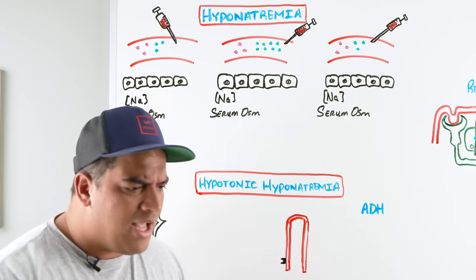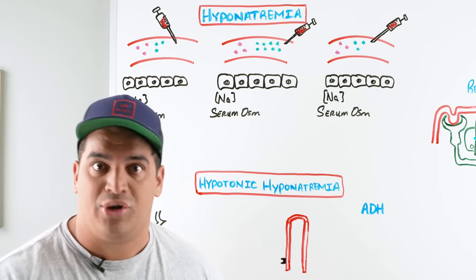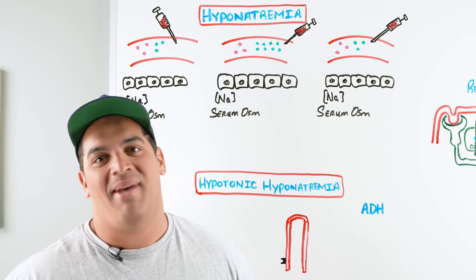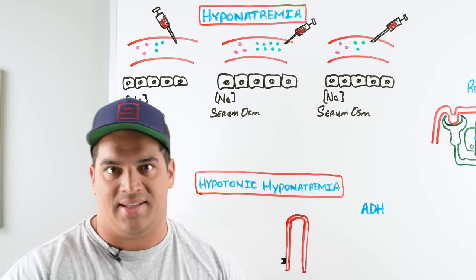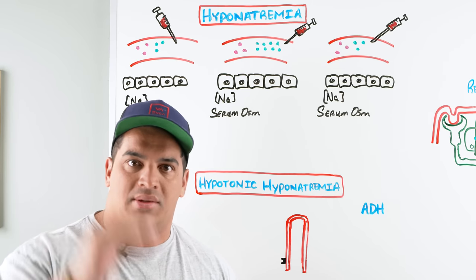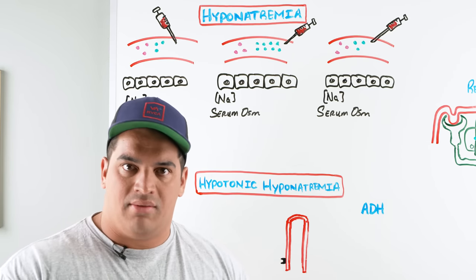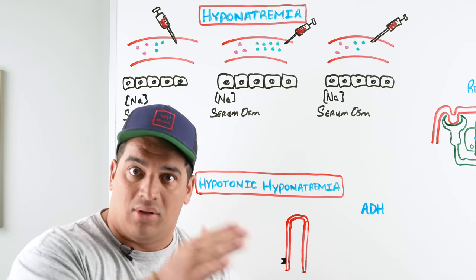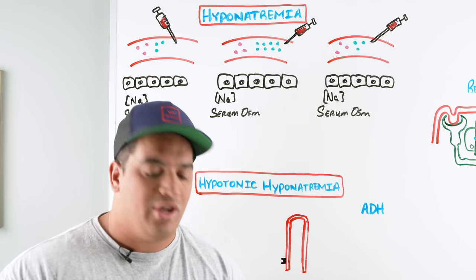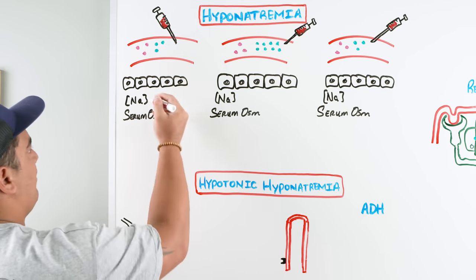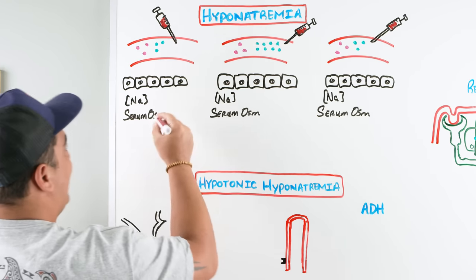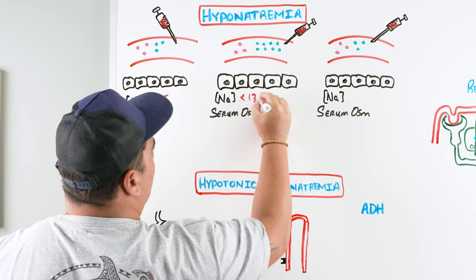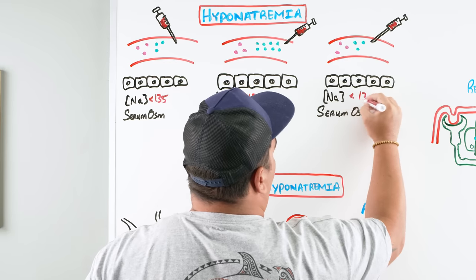Often patients don't come in saying 'hey doc I got hyponatremia' — oftentimes it's asymptomatic, an incidental lab finding. You order a CMP or BMP and the sodium comes back low. A normal sodium is generally 135 to 145, so if it's less than that lower limit of normal, it's abnormal — it's a hyponatremia. If the sodium is less than 135, that's considered to be hyponatremia, and this is relatively universal across labs.